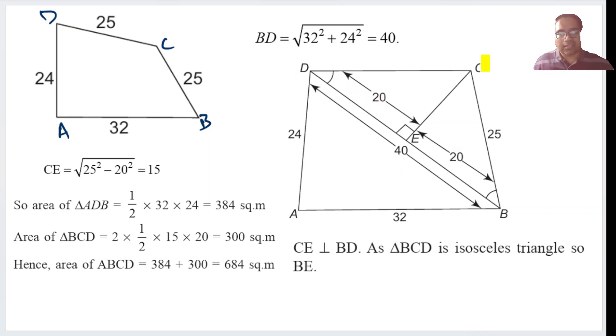Now again, because this is perpendicular, BEC and DEC both are again right angle triangles. And to calculate CE, 20 squared plus CE squared is equal to 25 squared. So CE squared is equal to 25 squared minus 20 squared. The square root of it, CE is equal to 15.